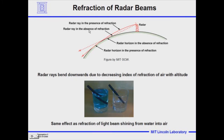The radar ray, in the absence of refraction, would move in a straight line — if the index of refraction were constant with height. But since the index of refraction varies with height, the radar beam is bent, and the radar horizon is extended farther away. So the radar can see farther than it could if the index of refraction did not change with height.